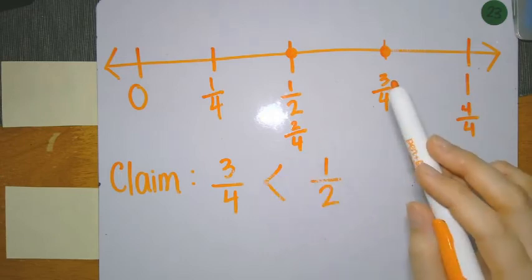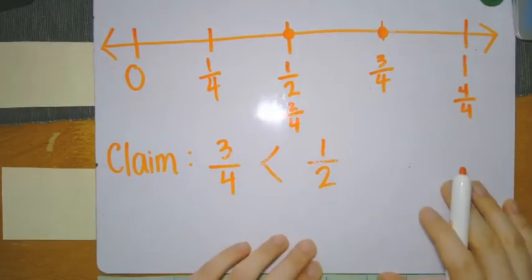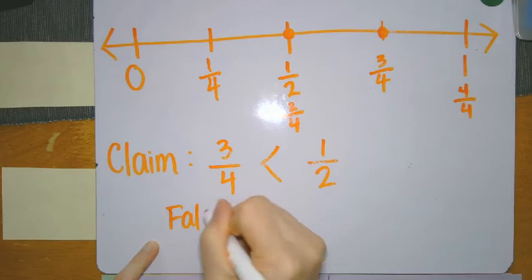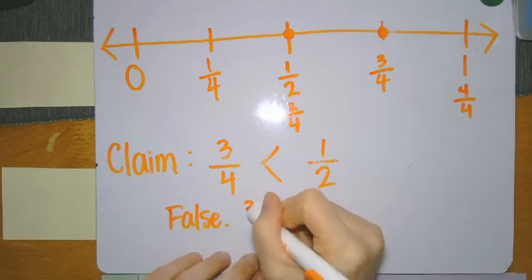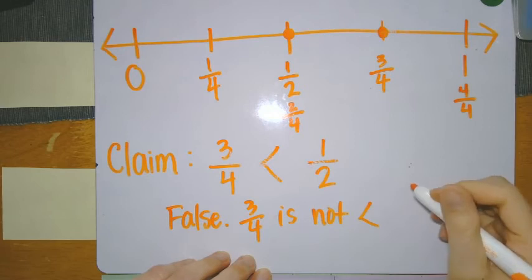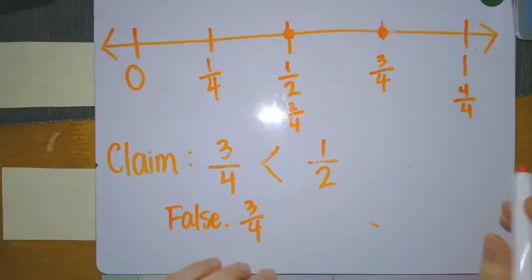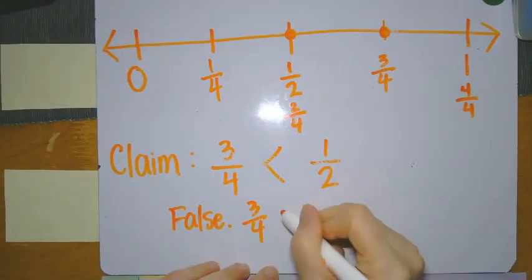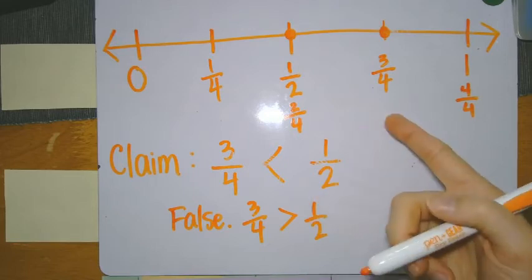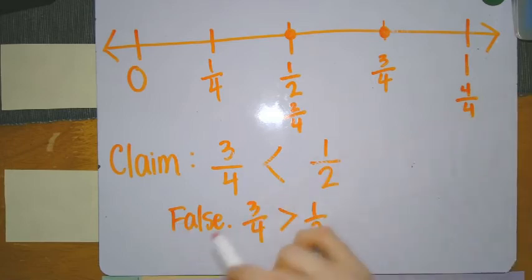Is three fourths less than one half? No — that's false. So I can give my claim: False. Three fourths is greater than one half. If you have a number line, that is one way to show it. If you're using your numbers, that's another way. There are lots of different ways to show how you know and how you can prove your work.